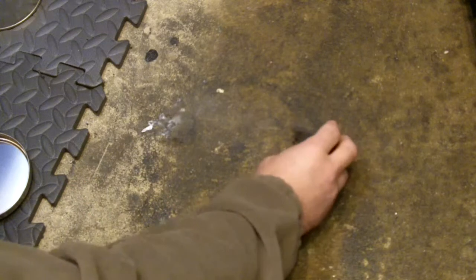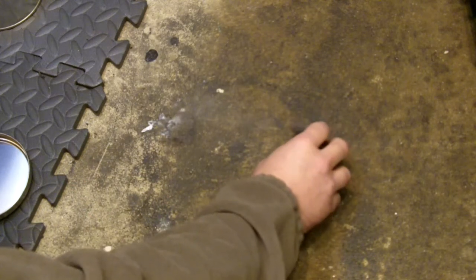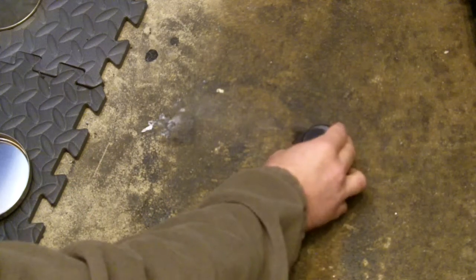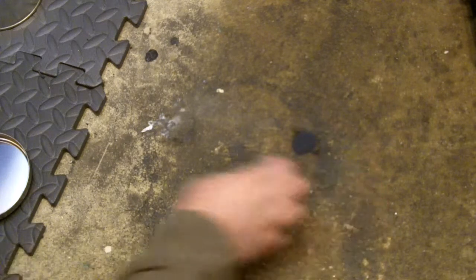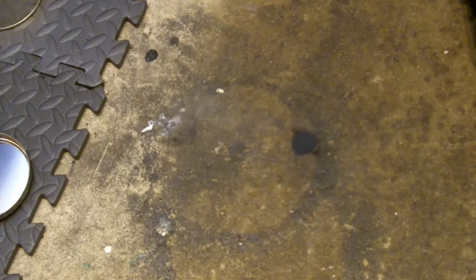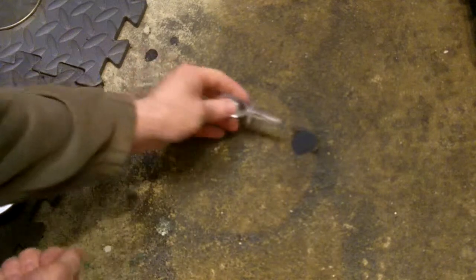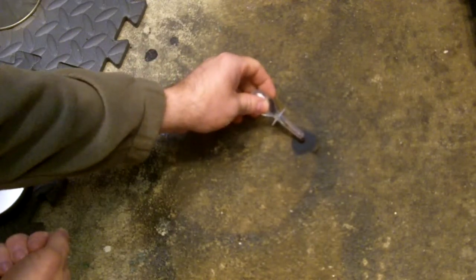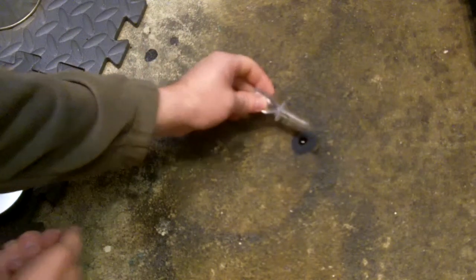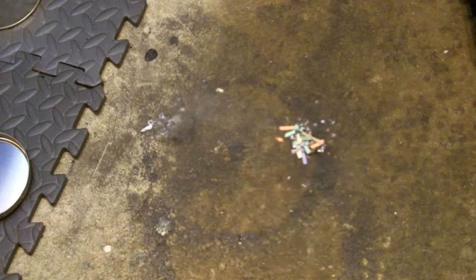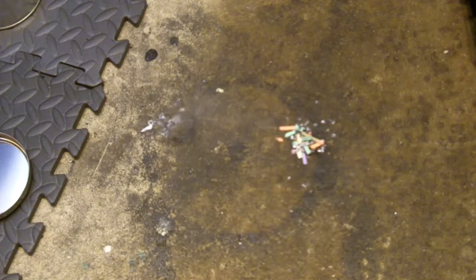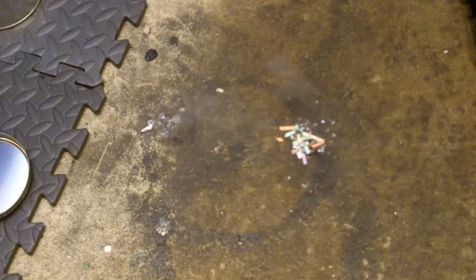All right, so potassium permanganate, flatten it out a little bit. It helps if there's a well in the center to catch the glycerin. And then this is a pile of magnesium strips and some paper strips.